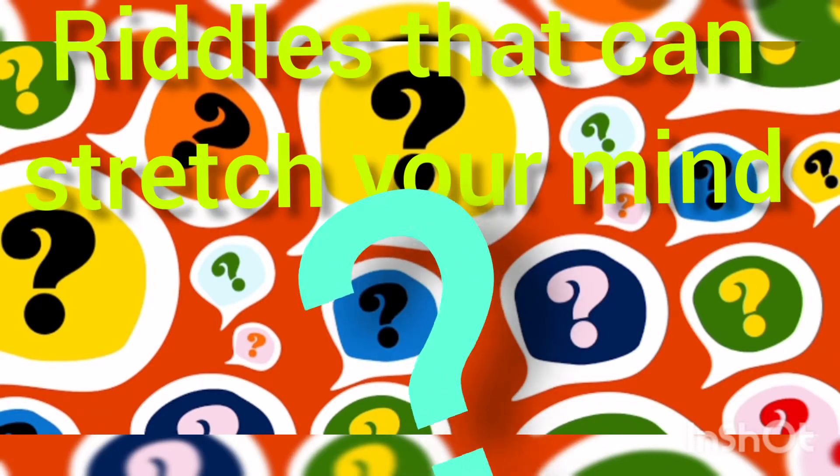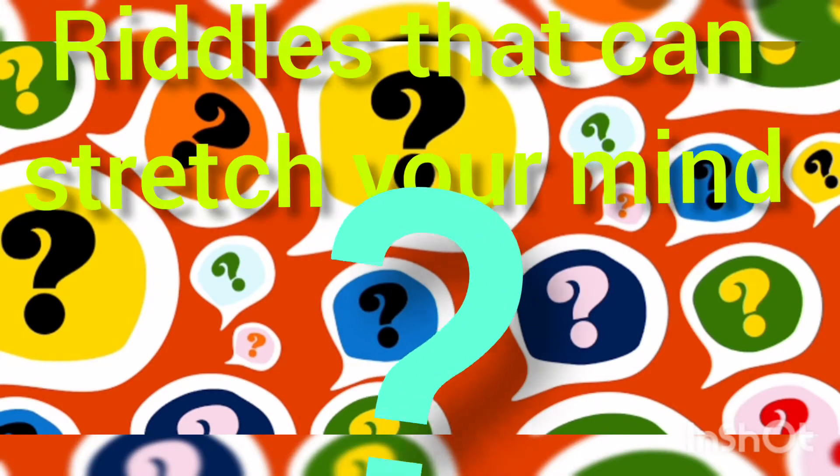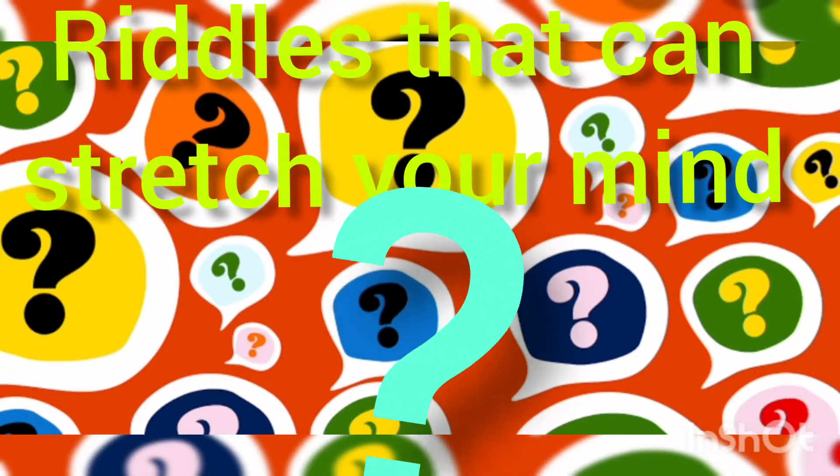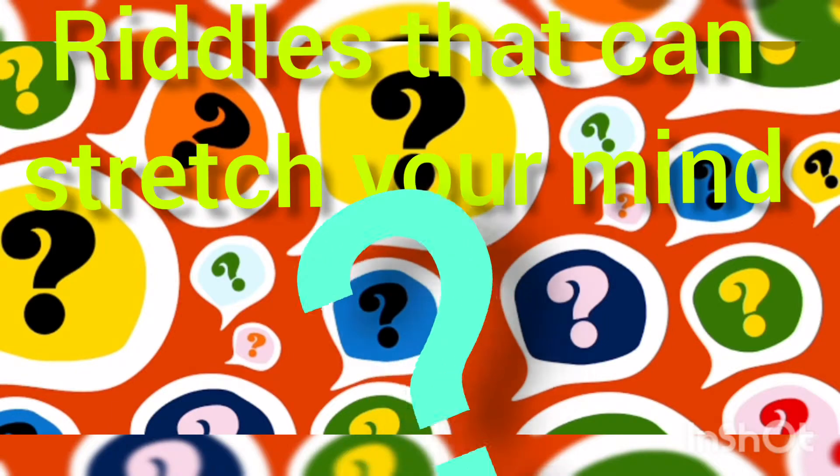Which word becomes shorter when you add two letters to it? So, the word short, if you add two letters to it, E and R, it becomes shorter, S-H-O-R-T-E-R. Okay, let me tell you another riddle.